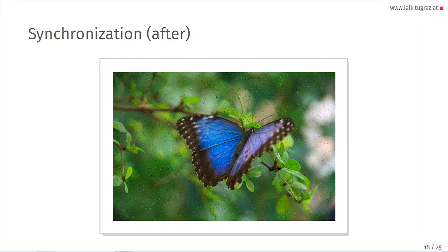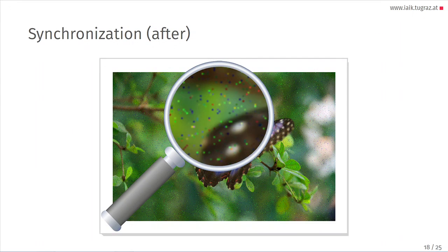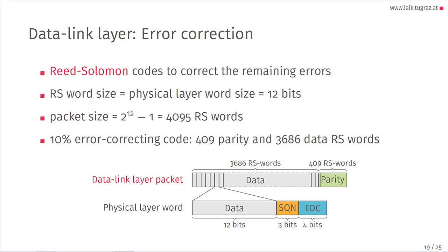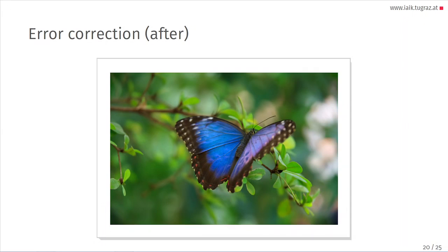After applying the physical layer corrections to the butterfly image, we can see it's much better but still has some errors. The data link layer handles these remaining errors using Reed-Solomon codes. We use a Reed-Solomon word size matching the physical layer word size of 12 bits. We do not care about the sequence number or error detection code of the physical layer word at this level. With a packet size of 4,000 Reed-Solomon words and, for example, 10% error correcting codes, we have 400 words of parity. Transmitting the image again gives us a clear butterfly — everything is fine.